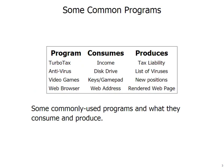For example, a program like TurboTax consumes information about your income, your salary, your deductions, anything like that, and it produces your tax liability — how much you owe or what sort of refund you're going to get. An antivirus program consumes the disk drive or a folder or directory on your disk drive and produces a list of viruses that are on the disk or in the folder.